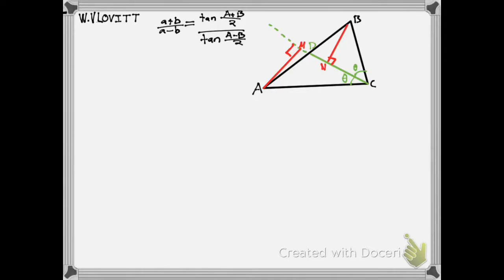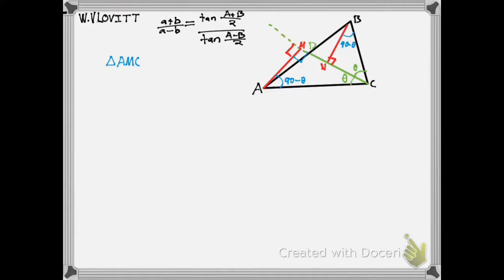Now we do a little angle chasing to find some similar triangles. Consider triangle AMC: it has angle theta, a right angle, and so the third angle is 90 − theta. Then in triangle BNC, we also have theta, a right angle, and 90 − theta. So triangle AMC is similar to triangle BNC.